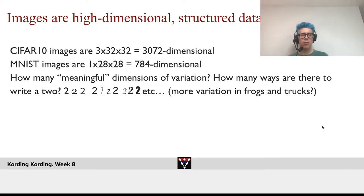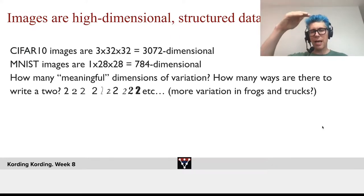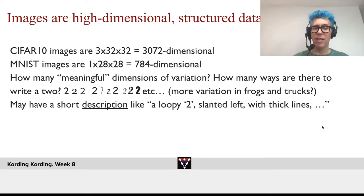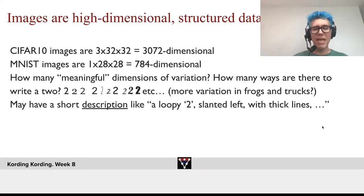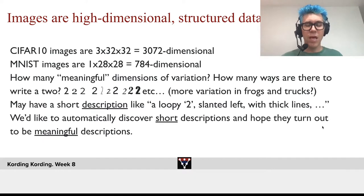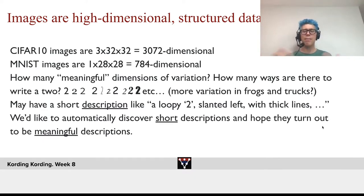How many ways are there to write the number two? We can make it smaller, narrower, higher, bolder, and so on. Think about variations in frogs and trucks for CIFAR-10 — there are quite a lot of different dimensions along which frogs and trucks can differ. Many have short descriptions: for example, there's a loopy two, a slanted-left with thick lines, and so forth. We'd like to automatically take a dataset and find out what these dimensions are along which the number two differs, and where we can produce short descriptions.